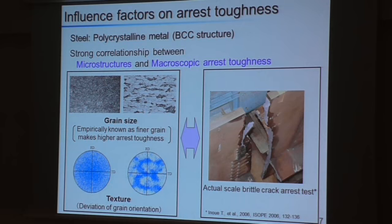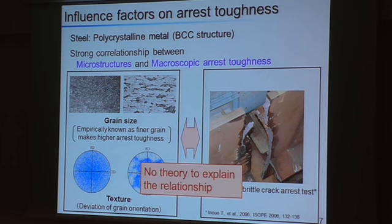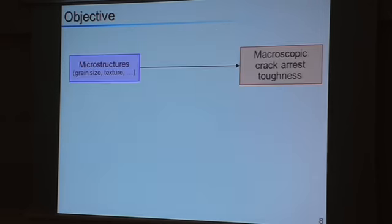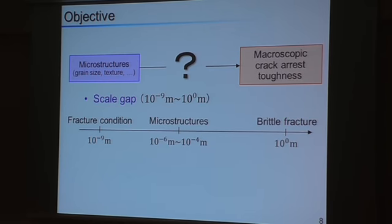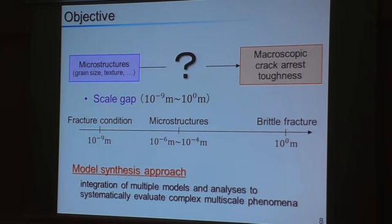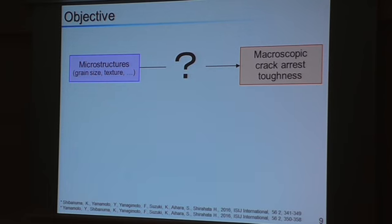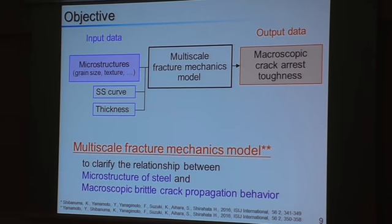However, there are no theories which have quantitatively explained this relationship in past investigations. One of the problems to be solved is the scale gap between microscopic and macroscopic phenomena. So today, we show the first attempt to solve the problem of scale gap by a model synthesis approach. To sum up, we propose a new multi-scale model to simulate complex behavior of brittle fracture based on the information of microstructures of steel.